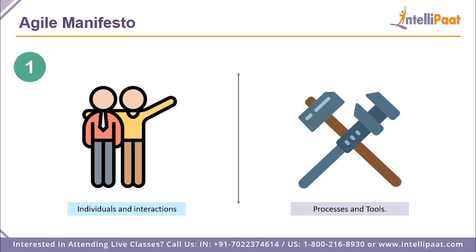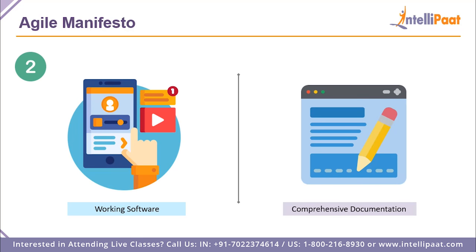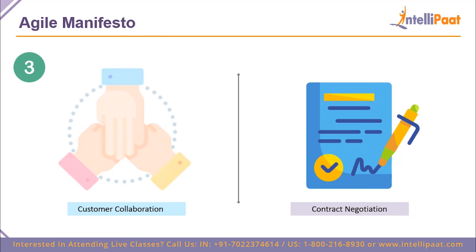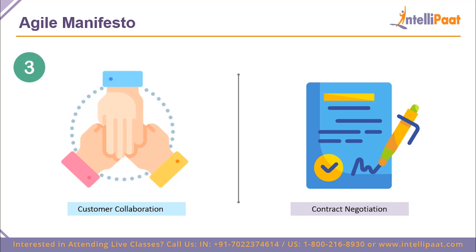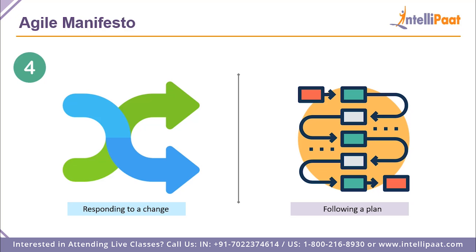There are similarly three more values. We have 'working software' over 'comprehensive documentation' — we value working software because you need a functioning product to provide to your customer before thinking about documentation. Then, 'customer collaboration' is valued more than 'contract negotiation' — we prioritize feedback from customers and apply it to our development over any contract we're signing with them. And the final value is 'responding to change' over 'following a plan,' because Agile is suited for an ever-changing market.